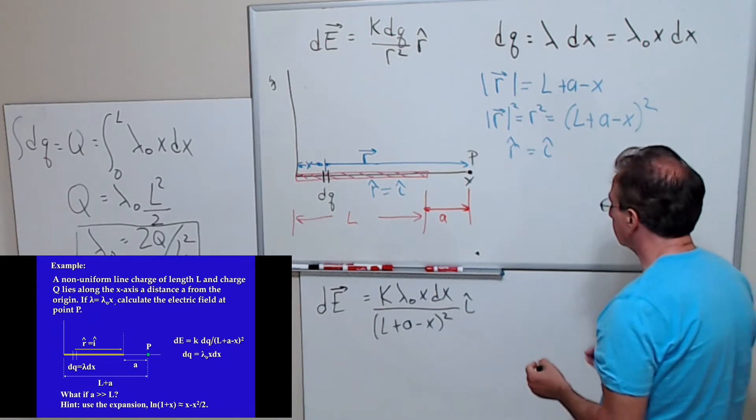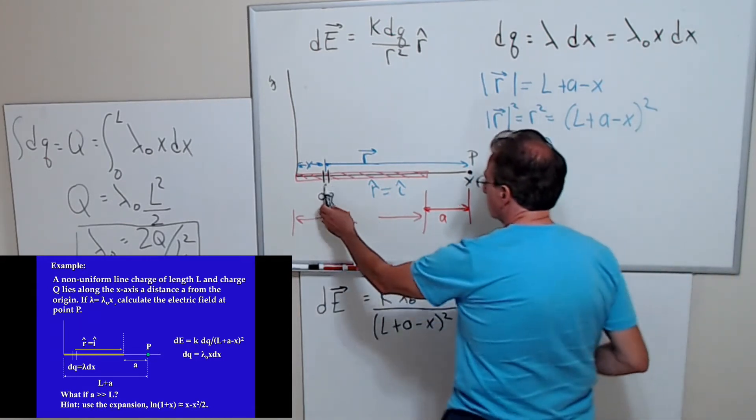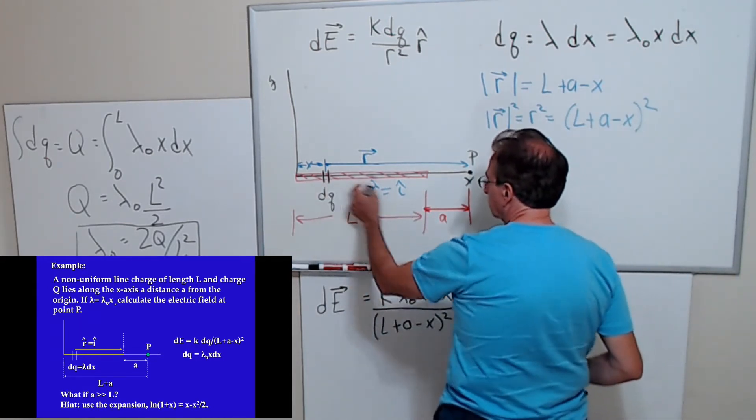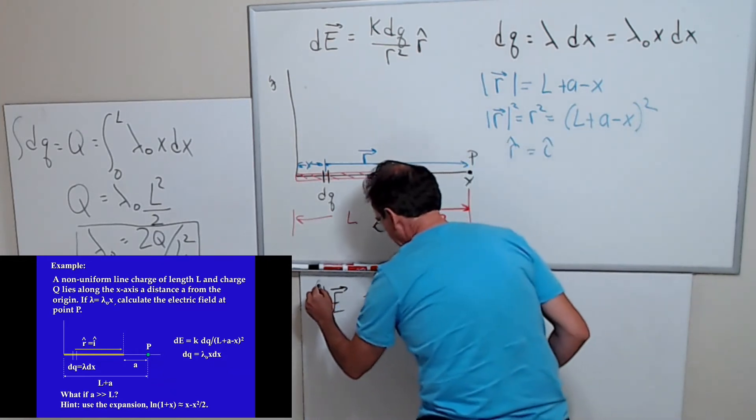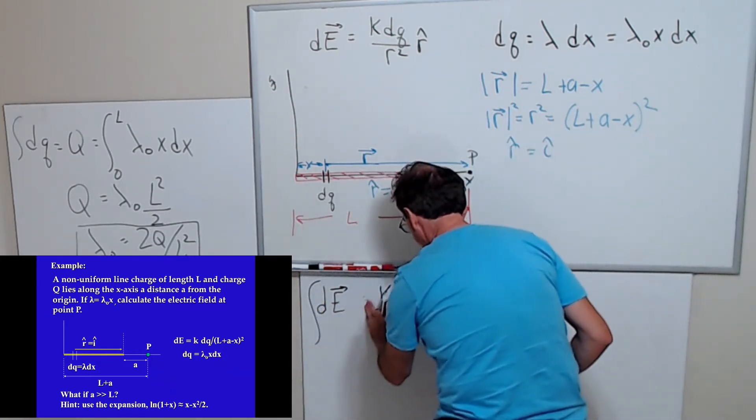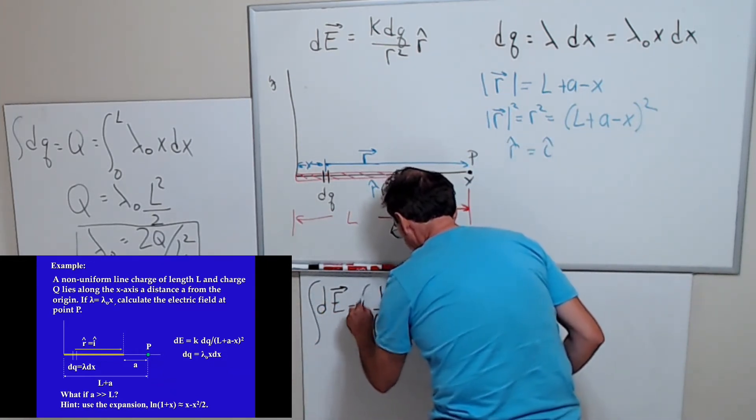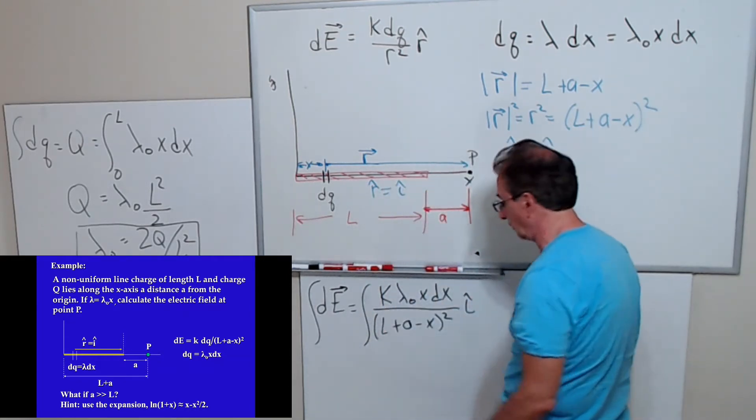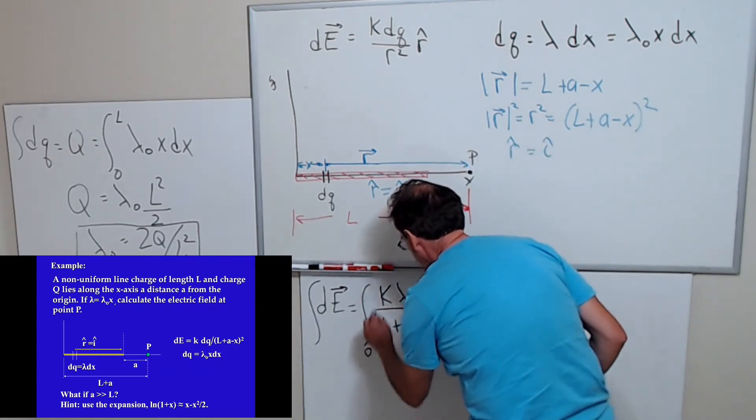So that's my expression for dE. All I have to do to get the total field here is sum up all the contributions of all the dQs. That means I've got to integrate over the length of the rod from x equals 0 to L.